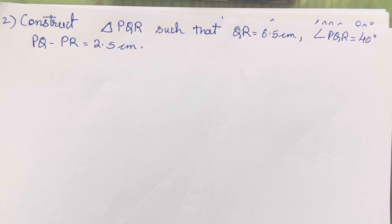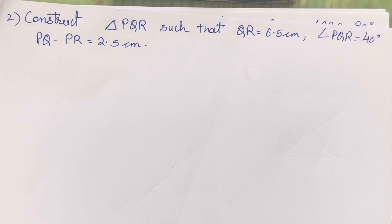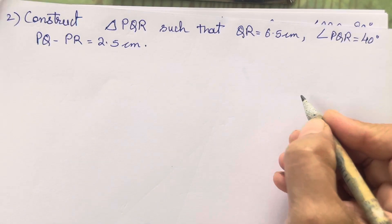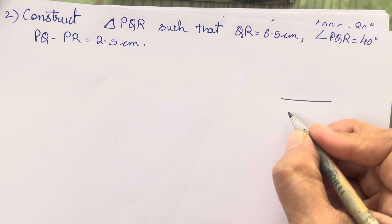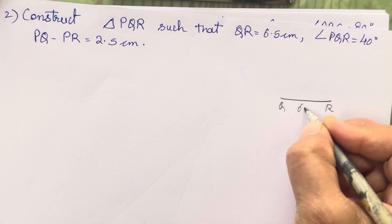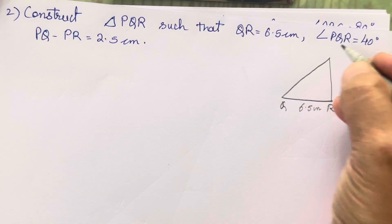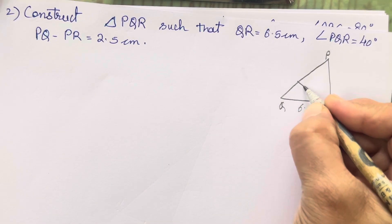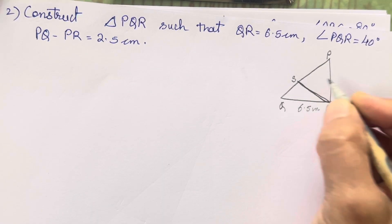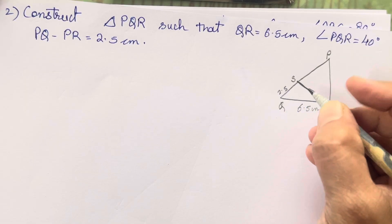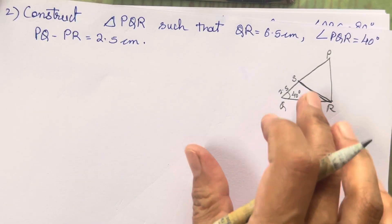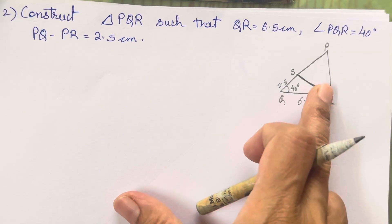Let's move on to the next diagram. Which says: construct triangle PQR such that QR is 6.5 cm, angle PQR is 40 degrees, and PQ minus PR is 2.5 cm. So the same method we are going to use. First we will draw a rough figure. This is going to be Q and R, 6.5 centimeter. This point is going to be P. Here we will construct S using a perpendicular bisector — 40 degrees. Whatever is given in the question, we have drawn in the rough sketch.